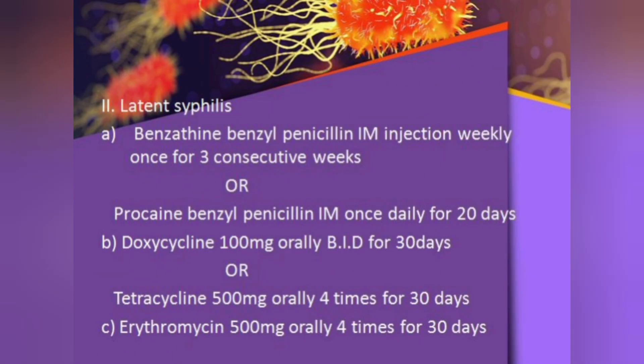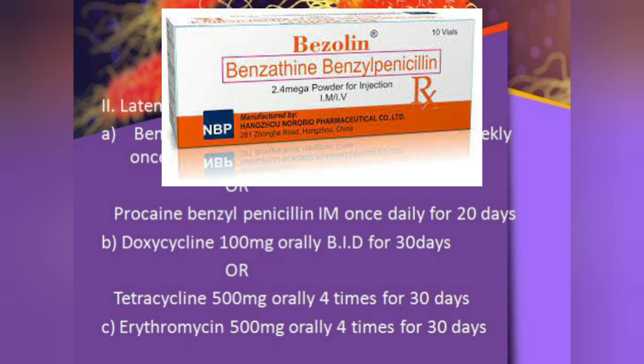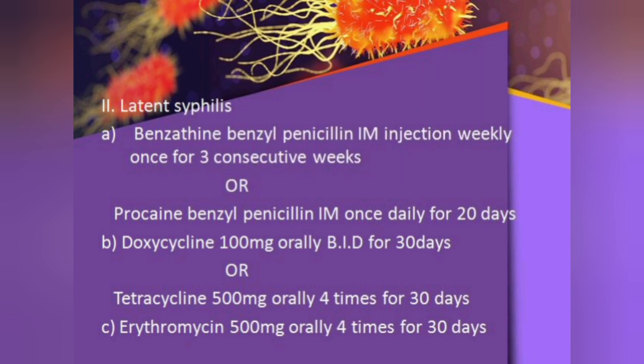In latent syphilis — more than two years — give benzathine benzylpenicillin IM injection weekly once for three consecutive weeks, or procaine benzylpenicillin IM daily for 20 days. If penicillin-allergic and non-pregnant, give doxycycline 100 mg orally twice daily for 30 days, or tetracycline 500 mg orally four times for 30 days. If pregnant, give erythromycin 500 mg orally four times daily for 30 days.